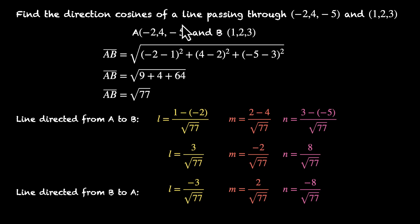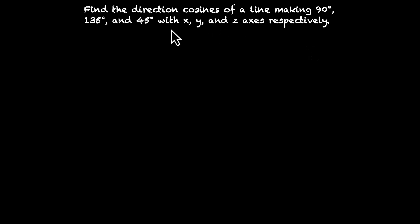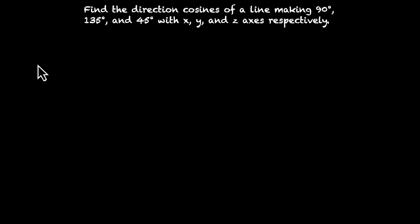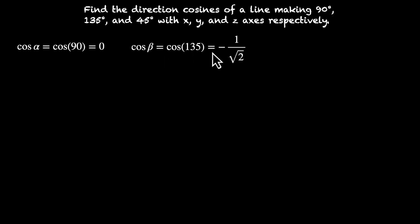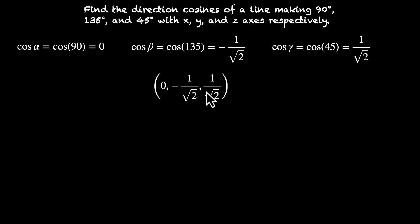Can we get direction cosines directly from the angles the line makes with the axes? Yes — find the direction cosines of a line making 90°, 135°, and 45° with the x, y, and z axes respectively. Using the basic definition: L = cos 90° = 0, M = cos 135° = −1/√2, N = cos 45° = 1/√2. The direction cosines are directly 0, −1/√2, and 1/√2.